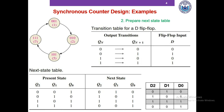The next step is to prepare the next state table using the transition table we have just made. The present state and next state can easily be written using the state diagram. We are designing a counter that counts 1, 2, 5, 7. The next state is the state the counter goes to from its present state upon application of a single clock pulse. So if the present state is 1, the next state is 2; if 2, next is 5; if 5, next is 7; if 7, next is 1, and the counter starts counting all over again.